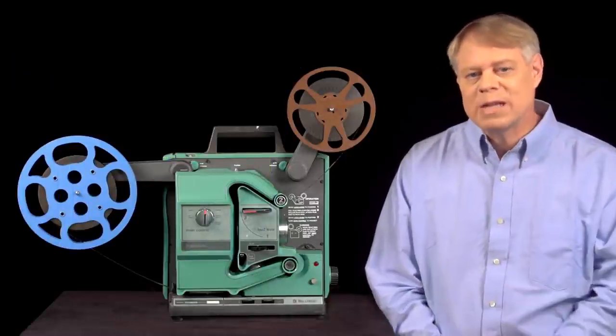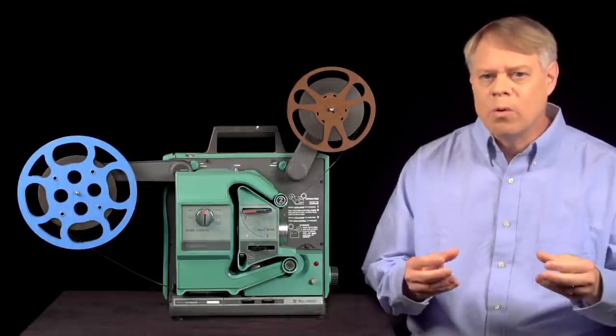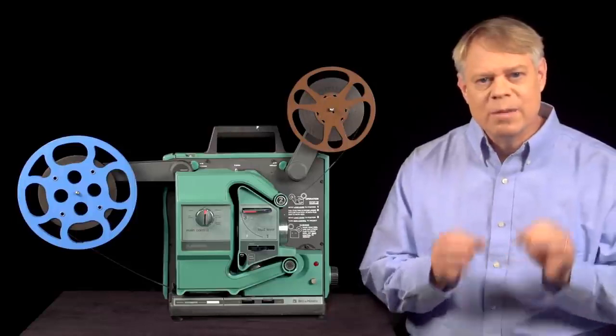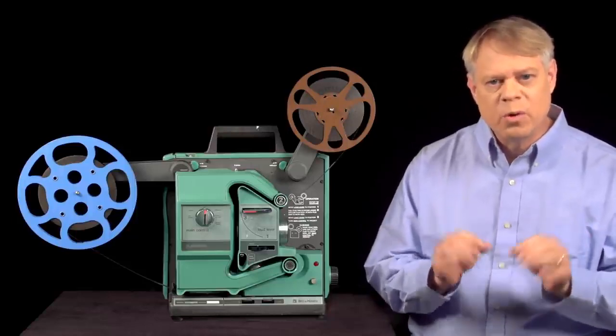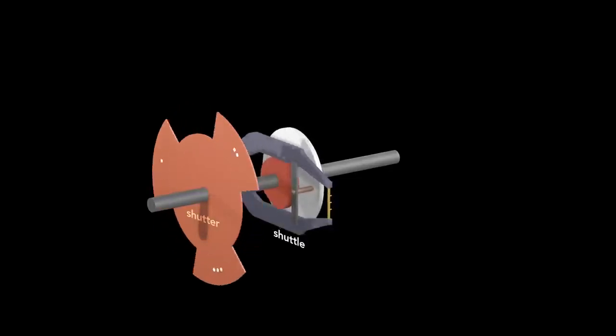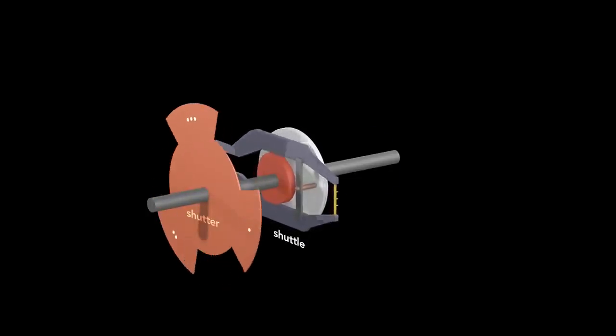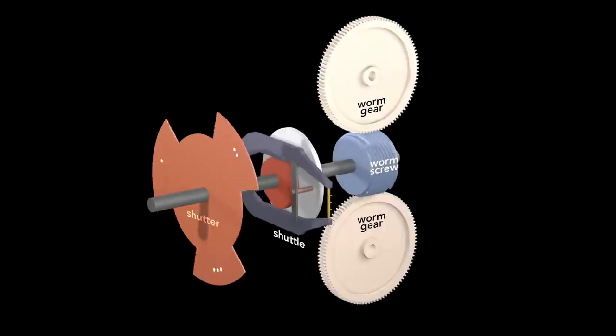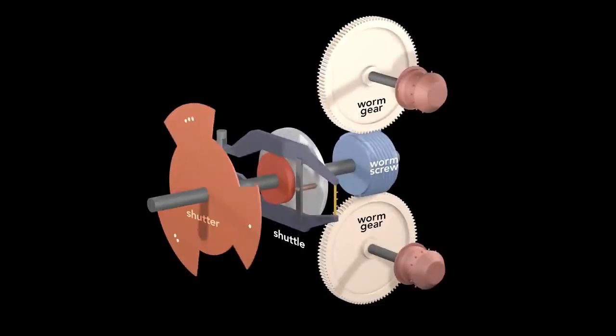To me, the most beautiful aspect of the film projector is how all the mechanisms are synced. The mechanisms are driven by a single rotating axle. The axle rotates the shutter and simultaneously turns the cam and advances the film. Behind the shuttle is a worm screw that drives two gears that are coaxial with the top and bottom sprockets.